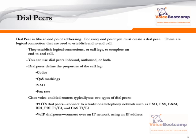Dial peers can be defined with specific parameters. For every dial peer, you can configure certain parameters, such as codec. One dial peer you can use G711, while another dial peer you can use G729. You can also do QoS marking by changing the precedence or DSCP marking. You can enable VAD, voice activation detection, and you can also enable fax rate.